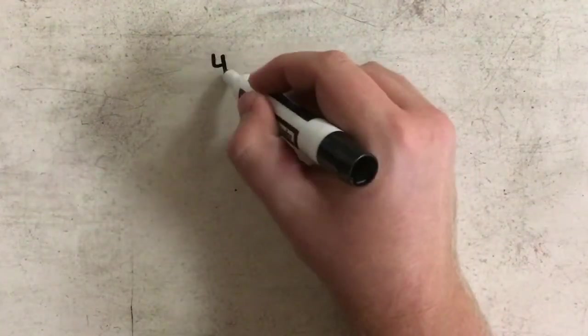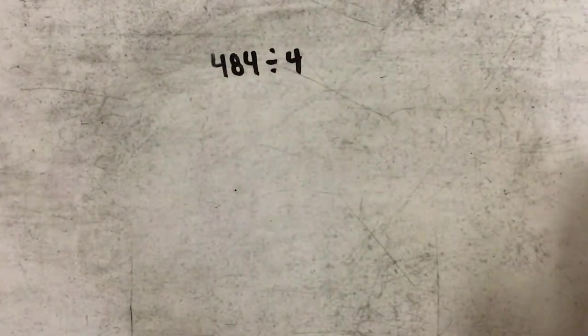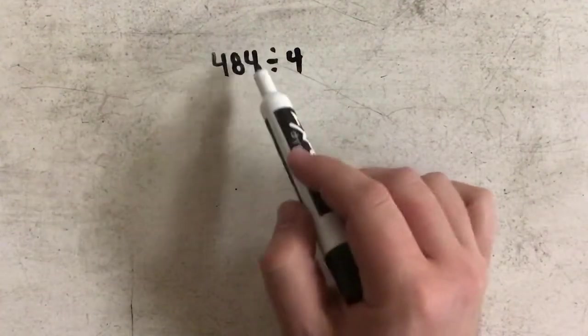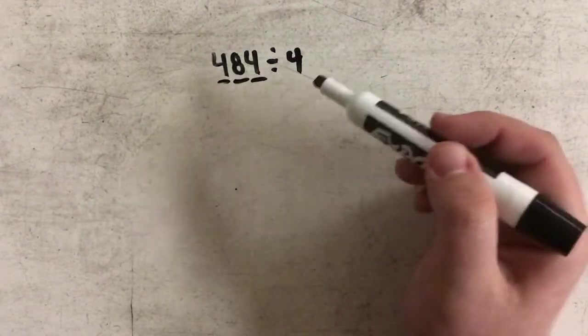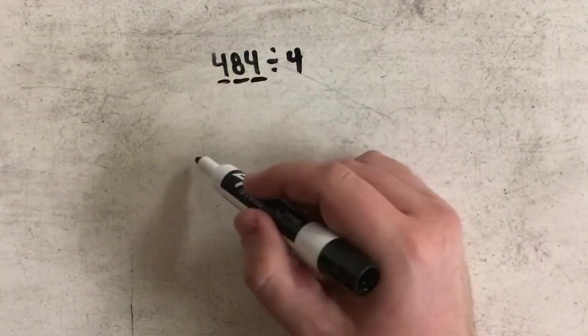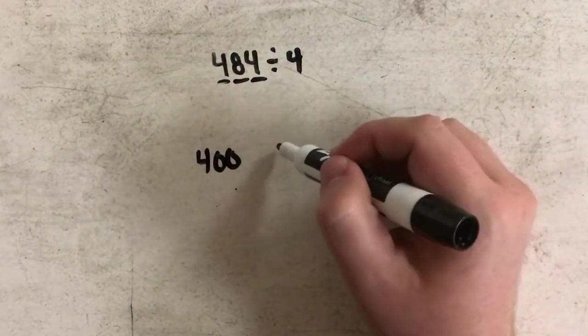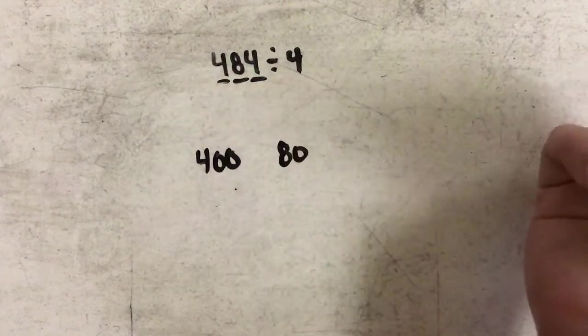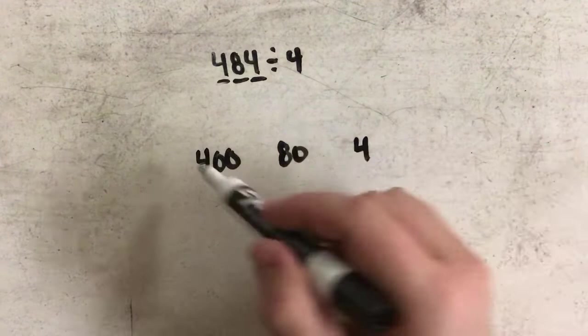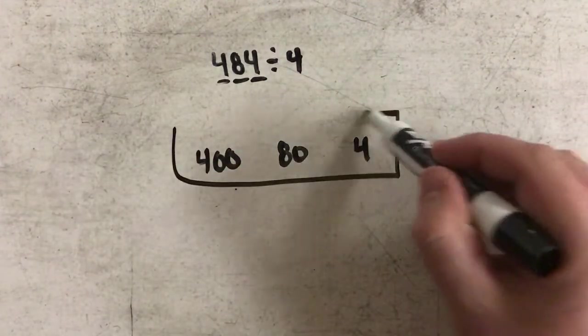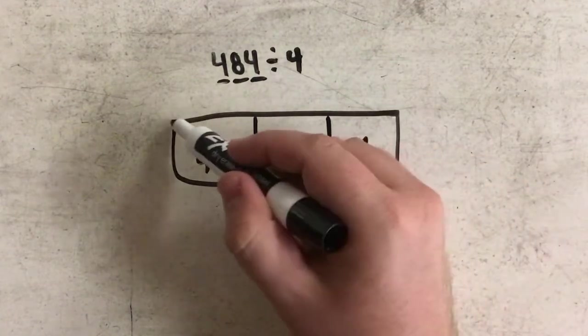So if I have a problem like 484 divided by 4, I'm going to break this number apart into its place value. So the 4 here really represents 400, the 8 represents 80, and the 4 represents 4. And I'm going to draw boxes around each one of those separately.